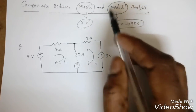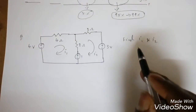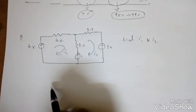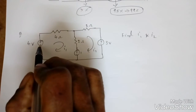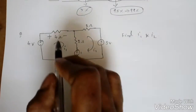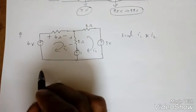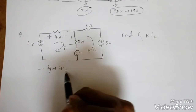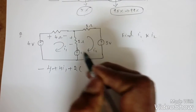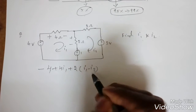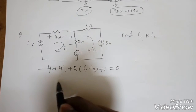Now let's see which method is simpler with an example. We need to find i1 and i2. There are two mesh loops. Writing KVL across the first loop: starting from the voltage source, applying polarities — the resistance values touched by i1 are 4 ohm and 2 ohm. In the shared branch, i1 is dominant, so the opposite current i2 is subtracted: the term becomes 2(i1 minus i2).